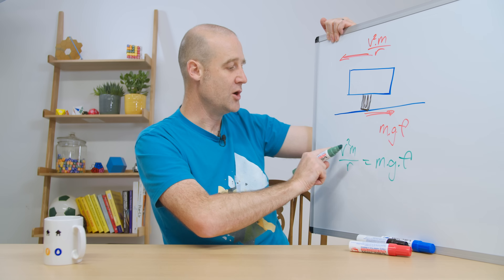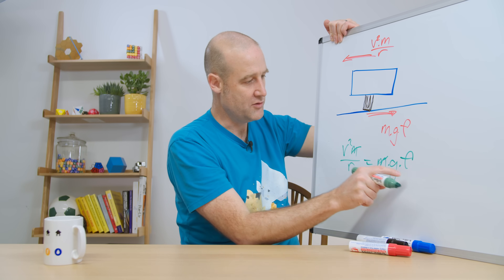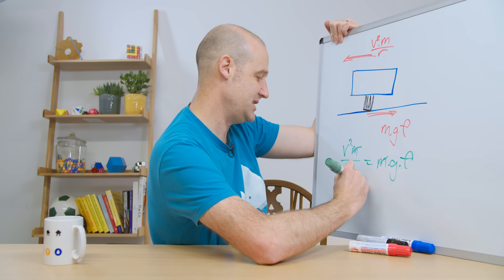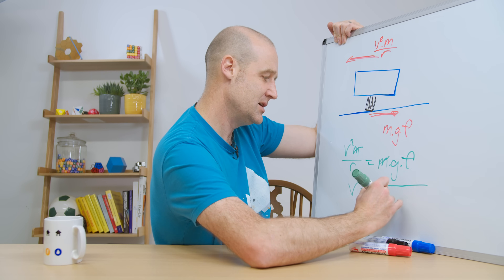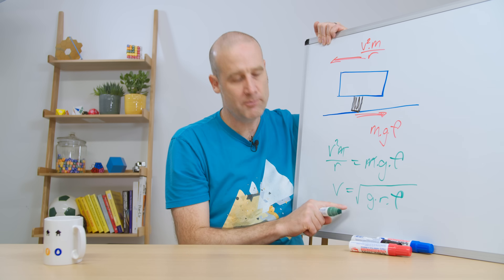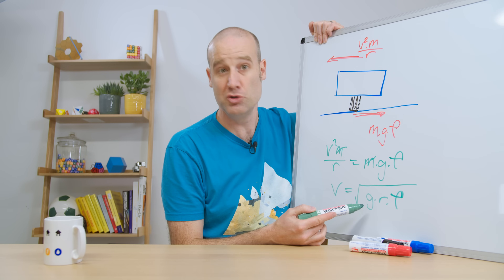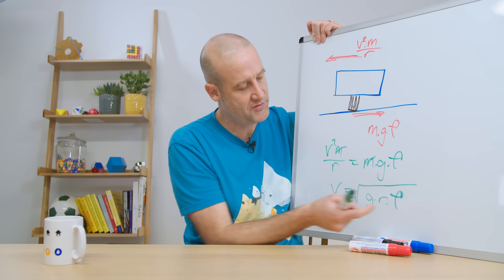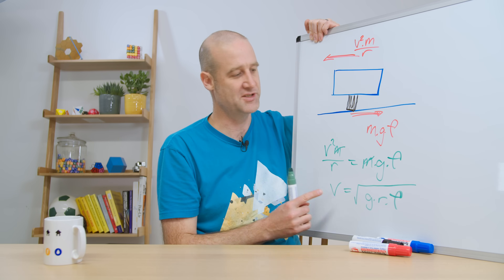We can already get rid of the mass on both sides and move the radius over. We end up with an equation: the velocity the car was originally going equals the square root of gravity times radius times friction. That is the number one equation for what we're doing here. If you know gravity, the radius the car was following as it spun out of control, and the coefficient of friction on the asphalt — multiply them together, take the square root, and you get the original velocity.